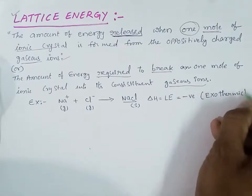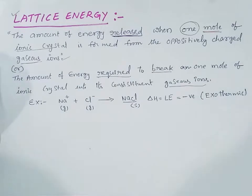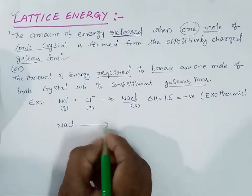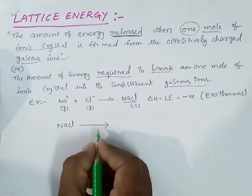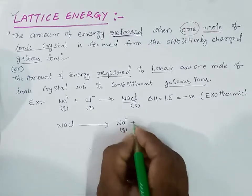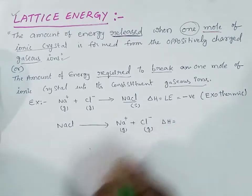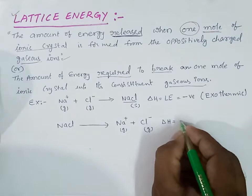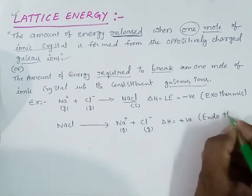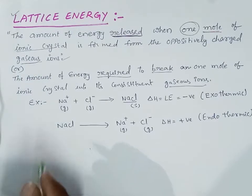For the second definition of lattice energy: when sodium chloride ionic crystal is broken, the amount of energy required to break one mole of sodium chloride ionic crystal into its constituent sodium ions and chloride ions. Here the energy is needed to break those bonds, so we use a positive value, and these reactions are known as endothermic reactions.